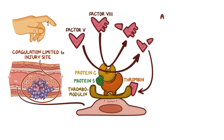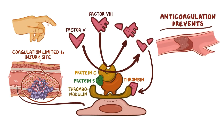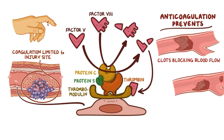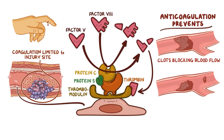So anticoagulation prevents clots from growing too large and blocking blood flow to tissues supplied by the vessel. It also prevents clots from getting so big that small parts of the growing clot break off in the form of emboli.